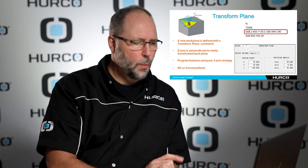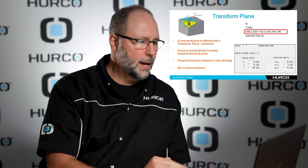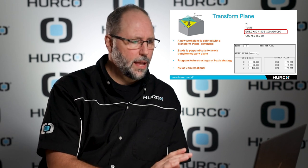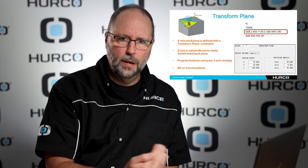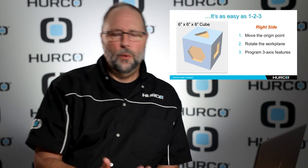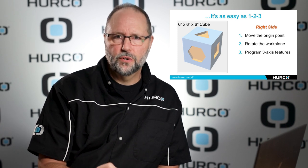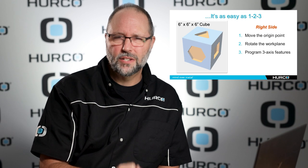On the slide here we have an example of the block for conversational programming at the bottom — the transform plane block — and in the red box you can see what the G-code line looks like. The numbers and information in there will be the same whether we do it in conversational or in NC. So why do we want to do this? Basically, to program on the right side of the part, programming features while referencing somewhere else on the part other than a location on that right side doesn't make any sense.